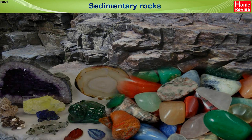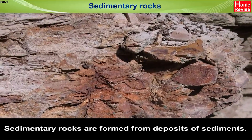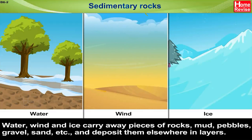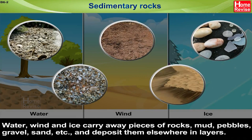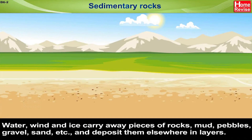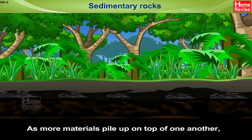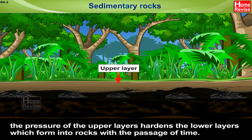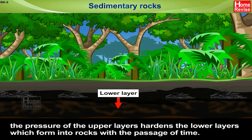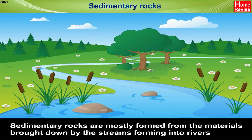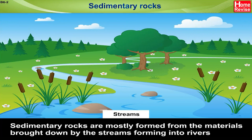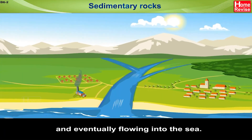Sedimentary rocks. Sedimentary rocks are formed from deposits of sediments. Water, wind and ice carry away pieces of rocks, mud, pebbles, gravel, sand, etc., and deposit them elsewhere in layers. As more materials pile up on top of one another, the pressure of the upper layers hardens the lower layers, which forms into rocks with the passage of time. Sedimentary rocks are mostly formed from the materials brought down by the streams forming into rivers and eventually flowing into the sea.